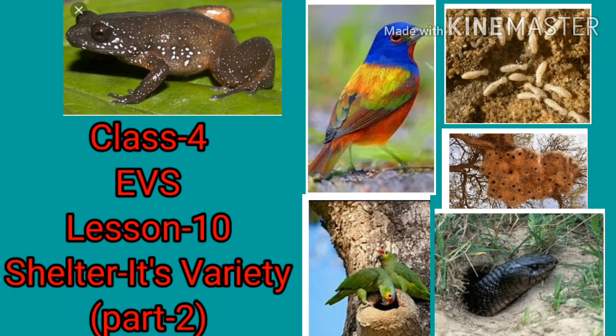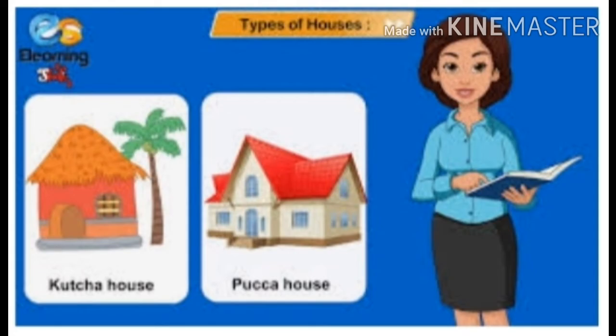Good morning children. In this lesson, Shelter, its variety, in part one you learned that houses are made according to the climatic conditions. People use different kinds of materials to build their houses. Today we will study about different types of houses.